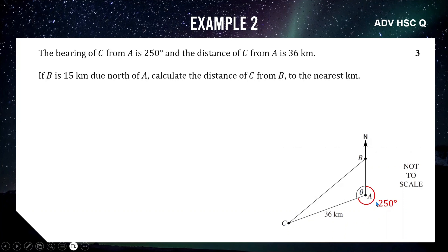Since the red angle is 250 degrees, the angle theta inside the triangle is the leftover to make 360 degrees. So 360 minus 250 gives 110 degrees inside the triangle. The question states B is 15 km north of A, so AB is 15. We're trying to find BC — let's call it x. This is not a right-angle triangle, so we cannot use SOHCAHTOA.